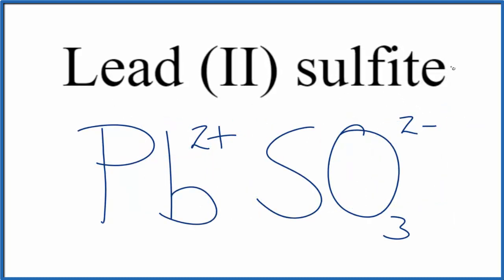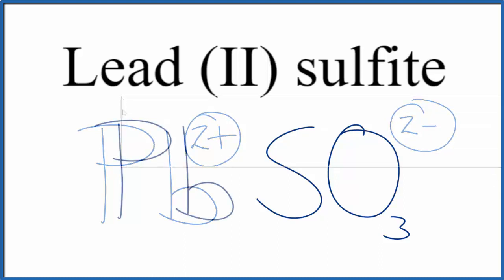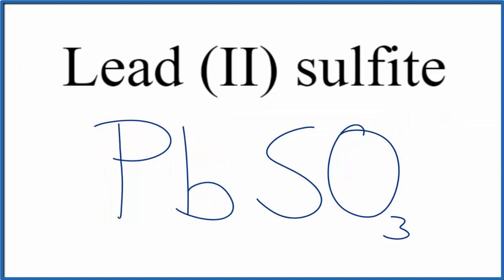Since lead-2-sulfite is neutral, it doesn't say ion after it, these charges need to add up to zero. We need a net charge of zero. So 2+, 2-, that adds up to zero. So this is the formula for lead-2-sulfite, PbSO3.